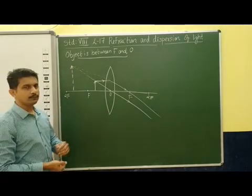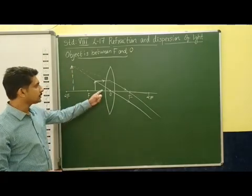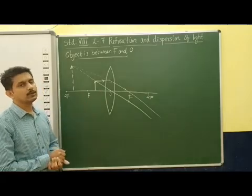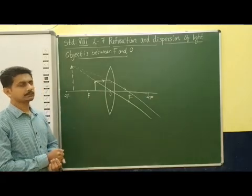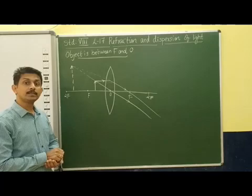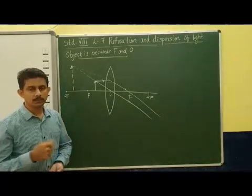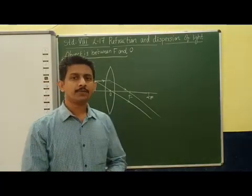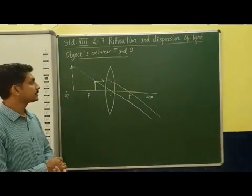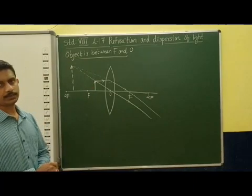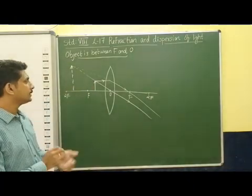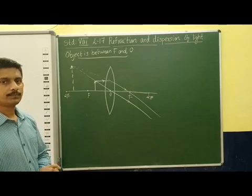The image is forming on the same side as the object. This type of image is not possible to obtain on a screen, so we can say that the nature is virtual. And the size of the image is enlarged.